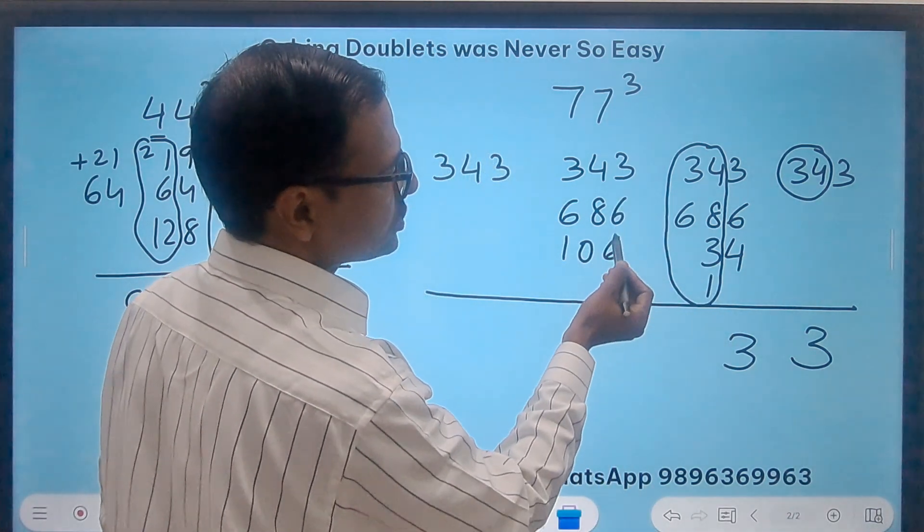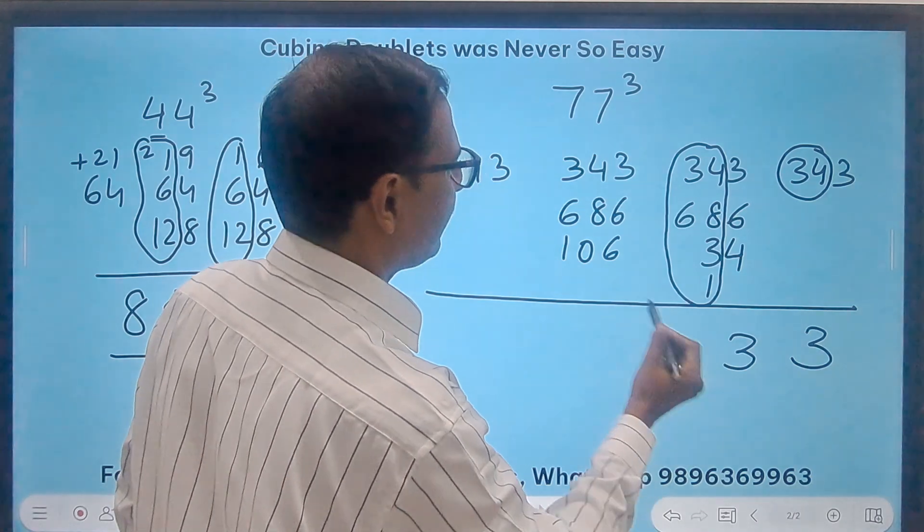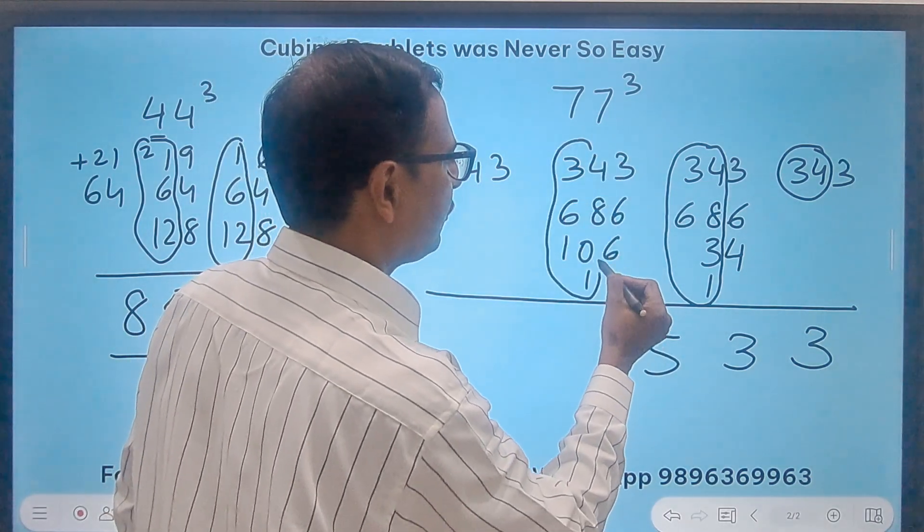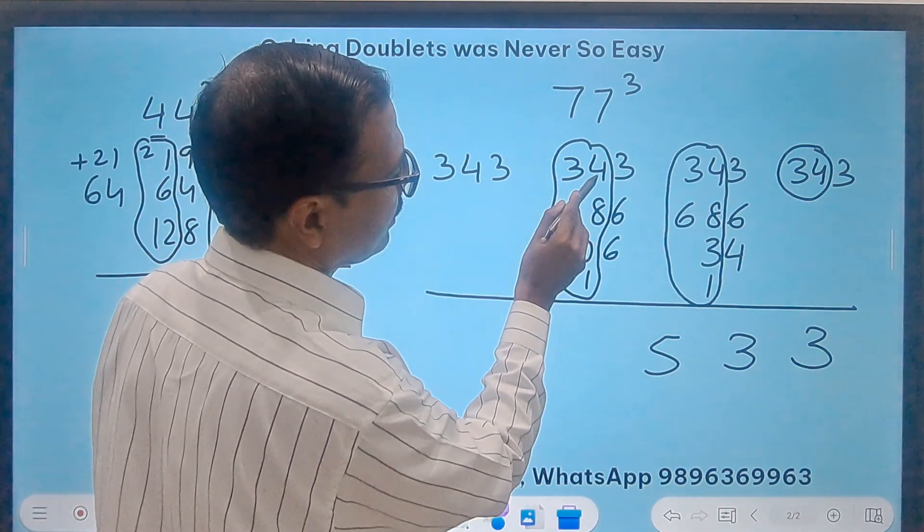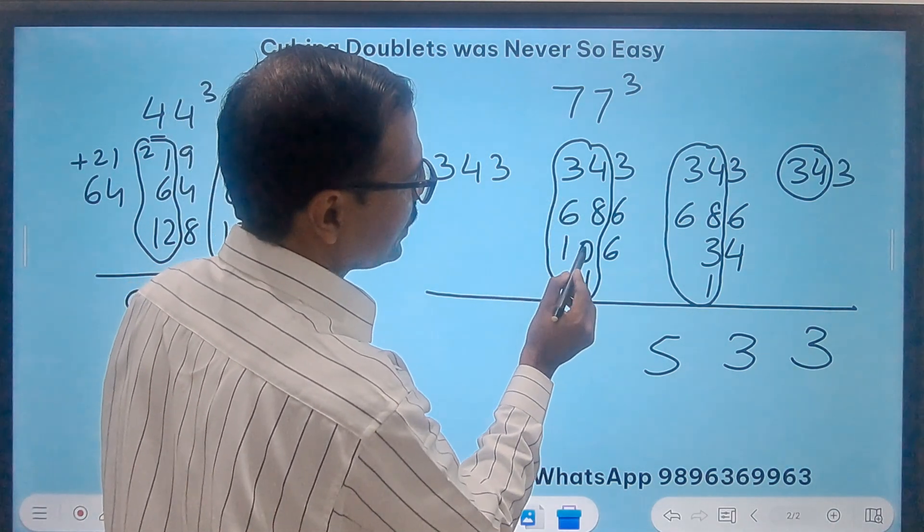Now 6 plus 6, 12 plus 3, 15, 5 and a 1 carry. Now this part will be carried forward now. How much is this? 16, 30, 90 and 12, 102, 112, 113.